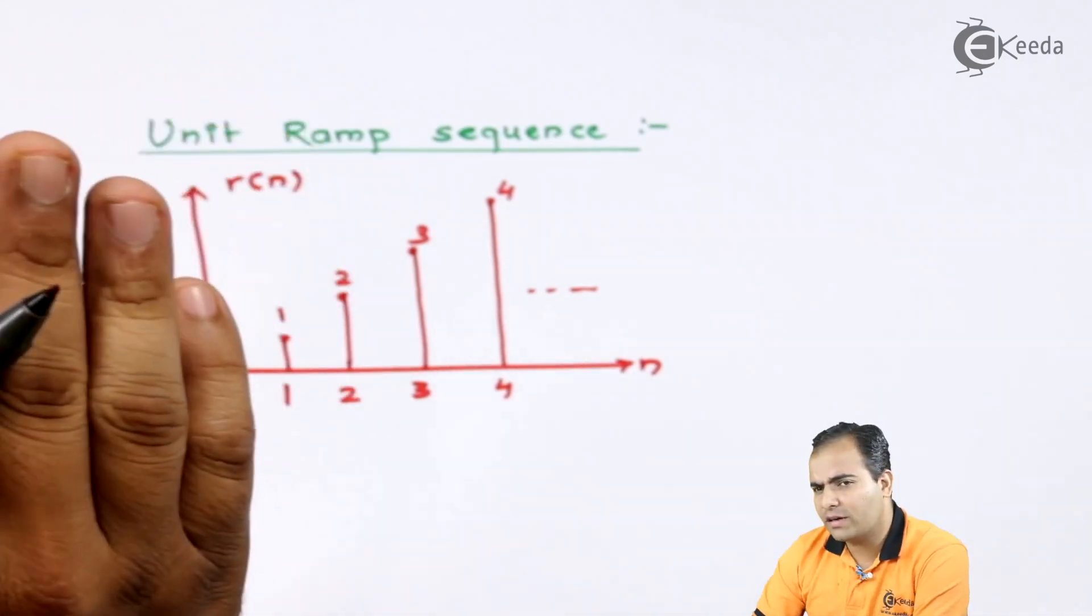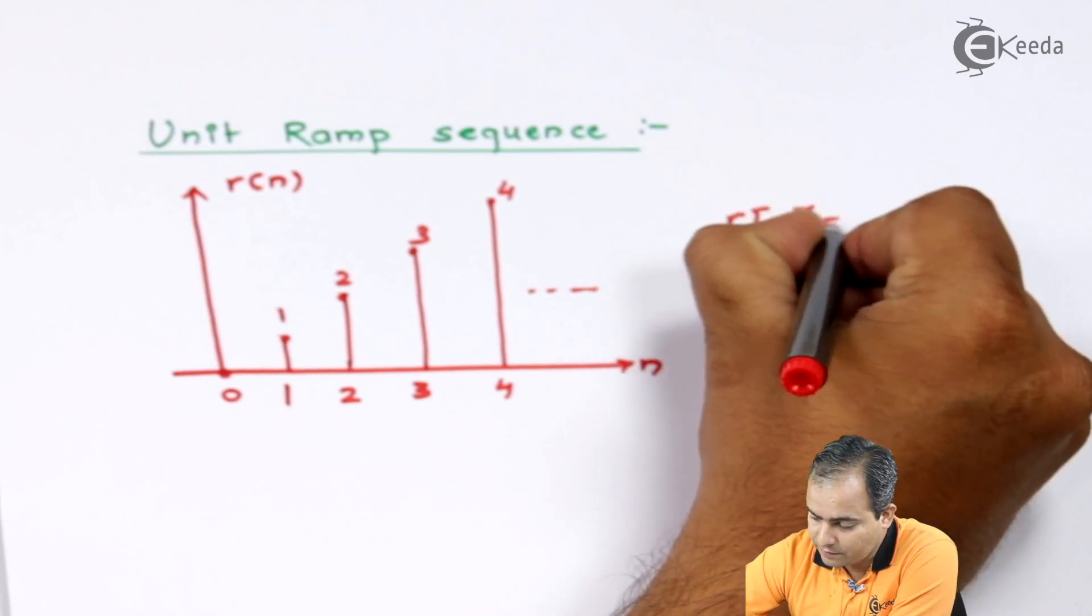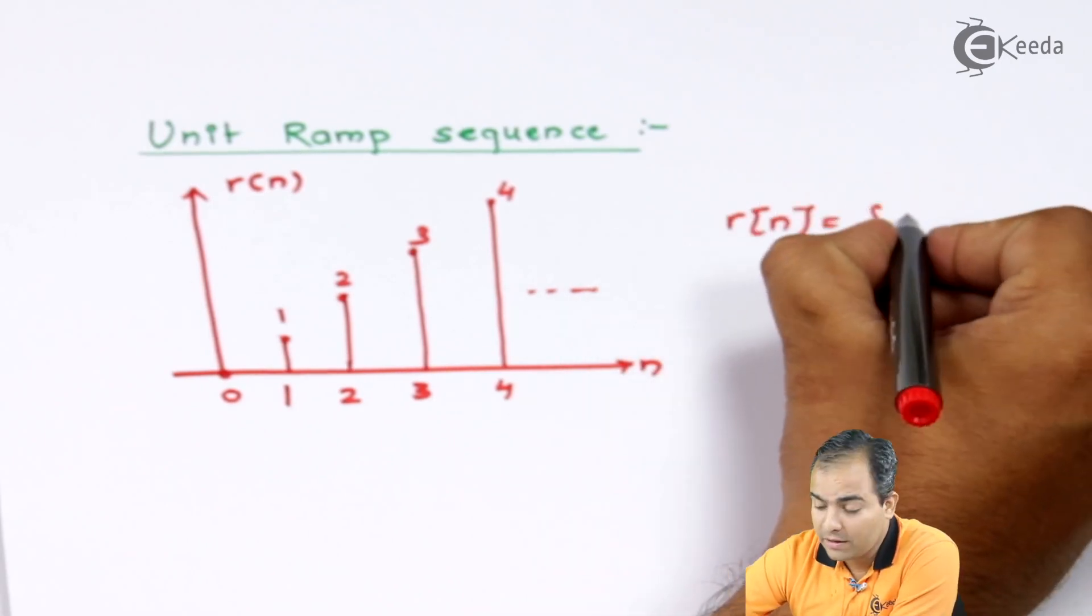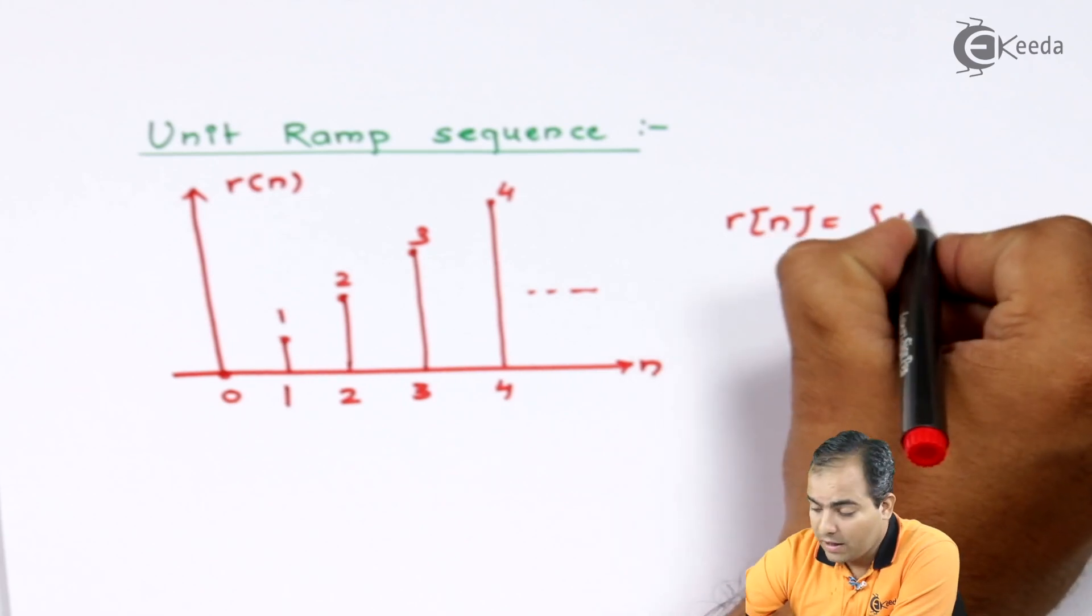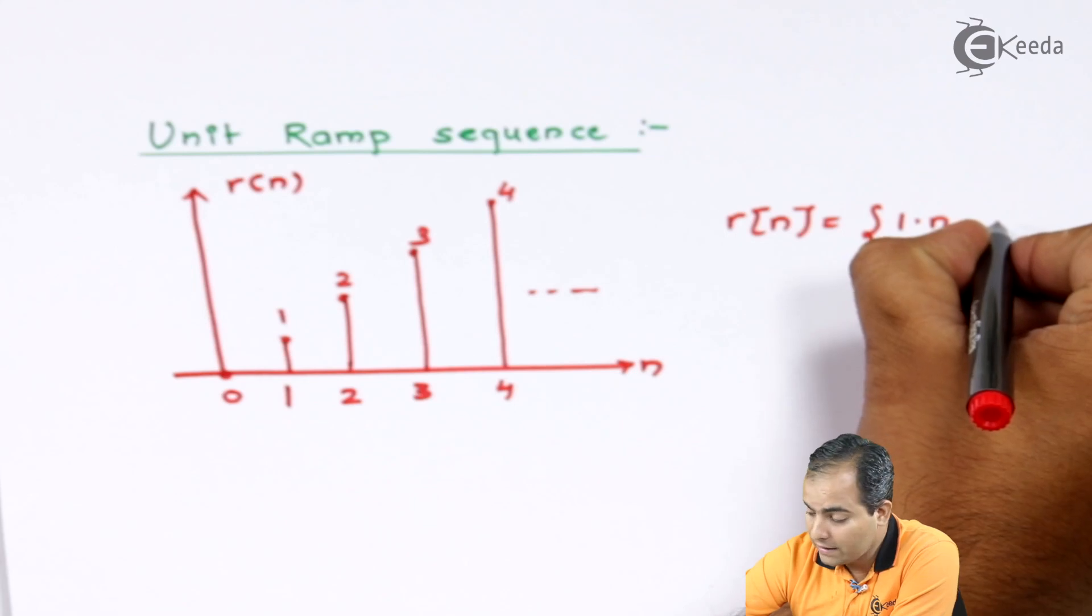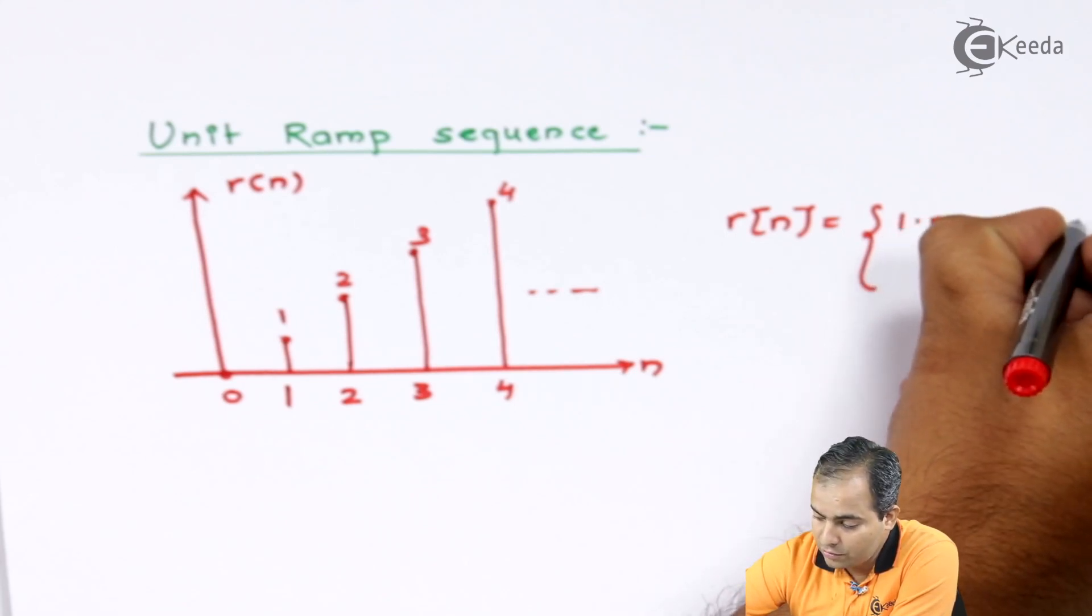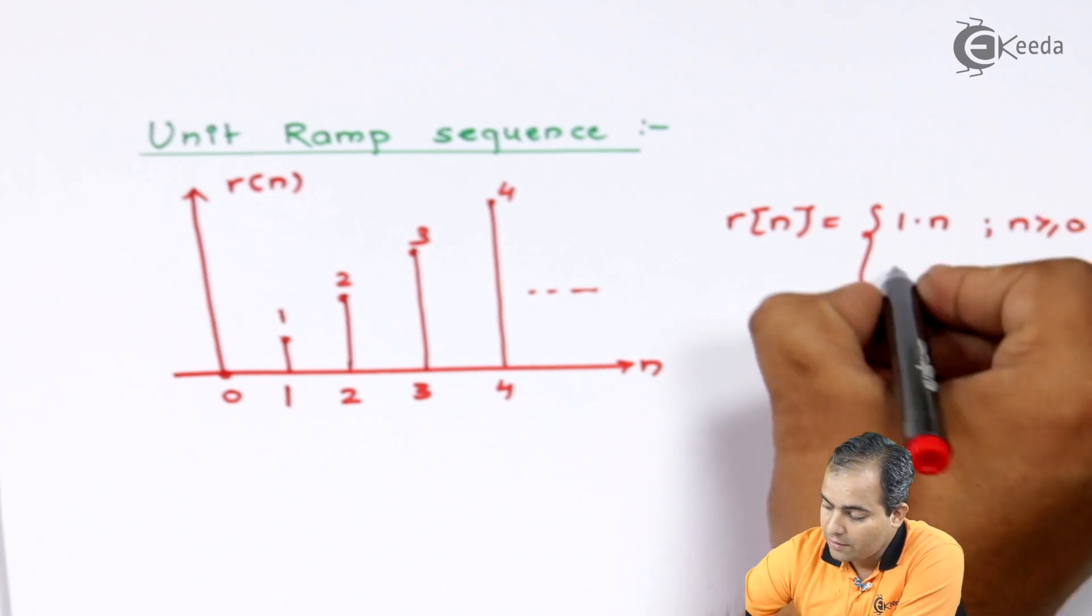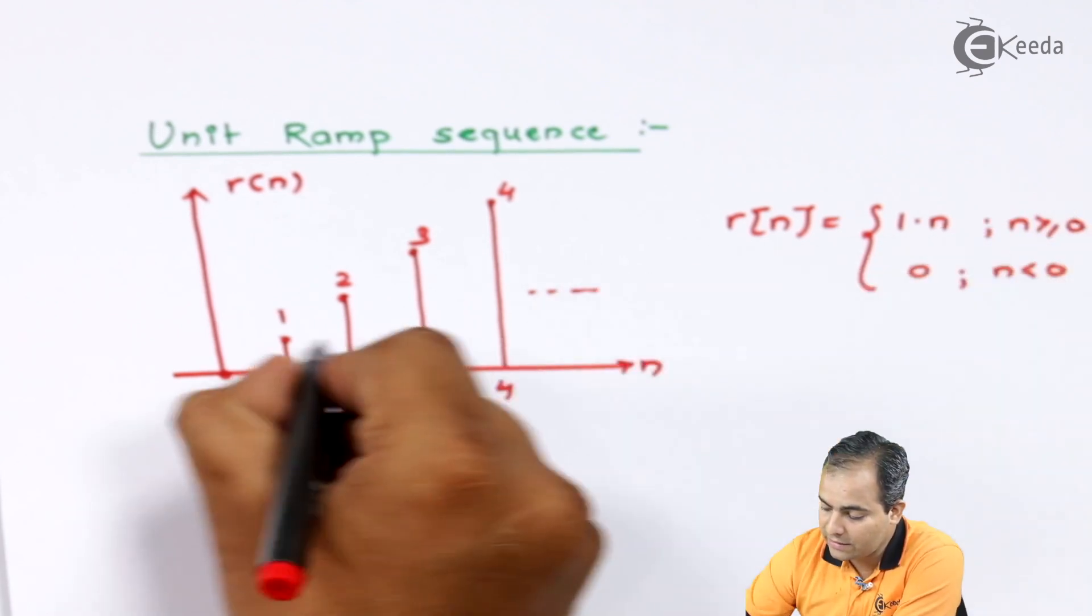Now, how to write the equation? r(n) can be written like this: it has slope, let's say 1, and it also varies with respect to time, that's why I have placed here n, for n greater than or equal to 0. But it is 0 for n less than 0. The reason I have